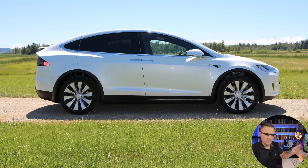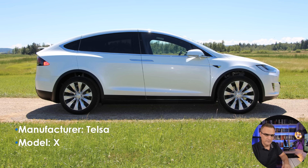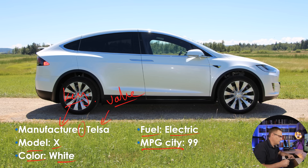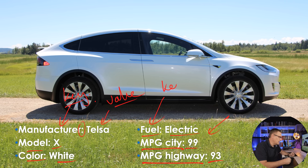To help us understand JSON formatting, let's start with a Tesla. Who's the manufacturer? That would be Tesla. What type of model is this? Model X. Notice how the data is formatted: manufacturer colon Tesla. This is known as a key, and this is known as a value — so we've got a key-value pair. Model X, color white, fuel electric, miles per gallon city 99, miles per gallon highway 93. We have a key separated by a colon, and then a value. You need to understand JSON formatting — that's an example of it.